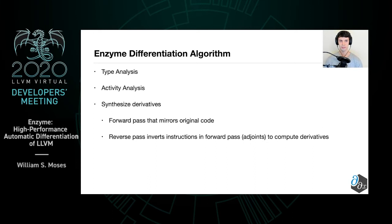The overall Enzyme differentiation algorithm works as follows. First, perform type analysis on all of the data, then perform activity analysis on all of the data, and finally synthesize the derivatives. This happens by first creating a new forward pass that mirrors the original code, and then creating a reverse pass that inverts all instructions and blocks in the original code to compute the derivatives. These particular instructions are known as adjoints.